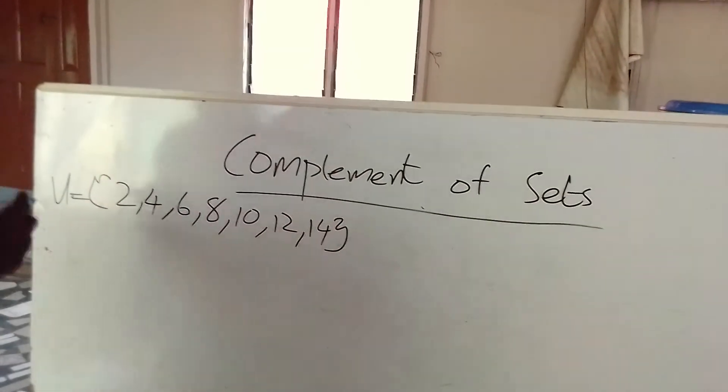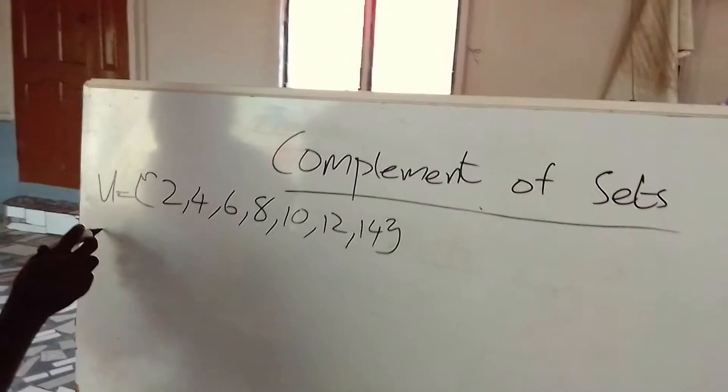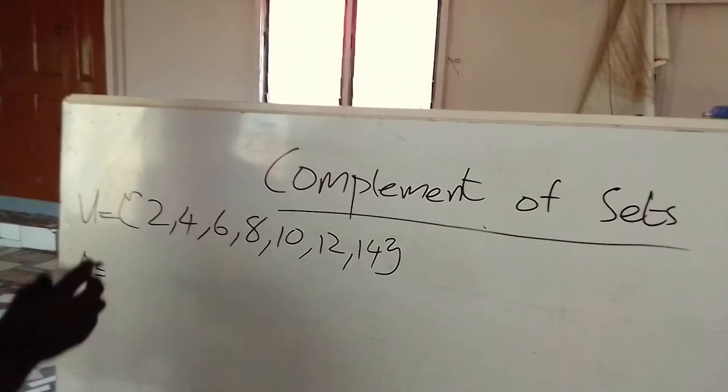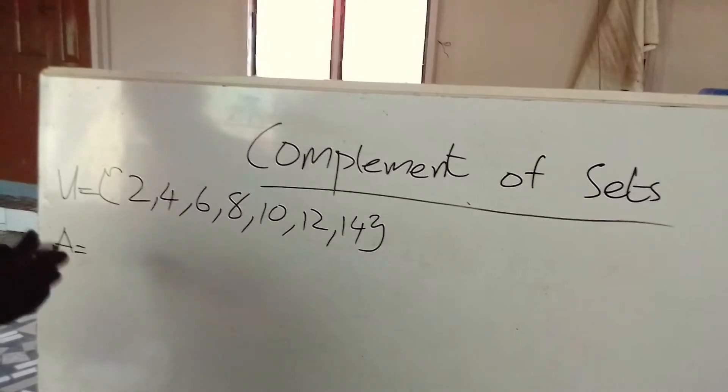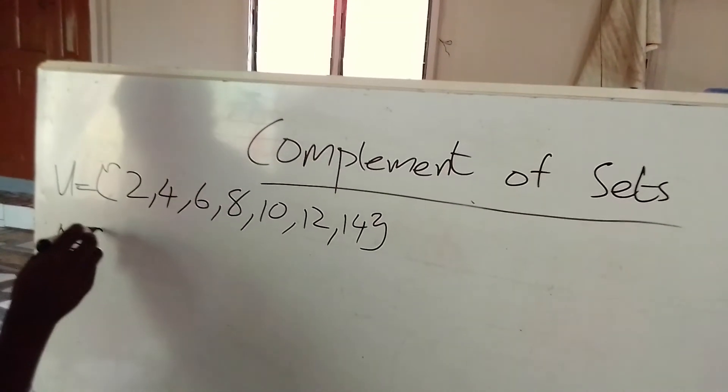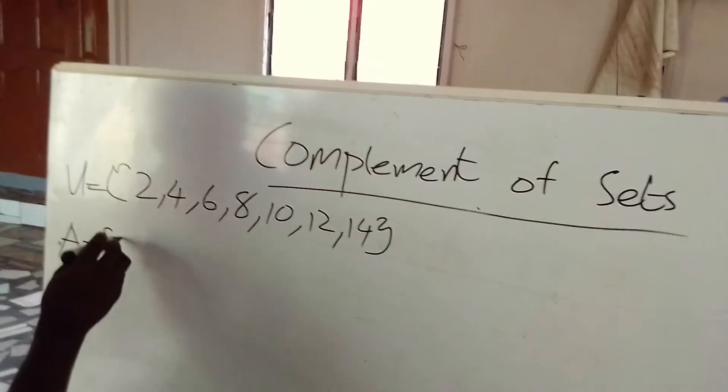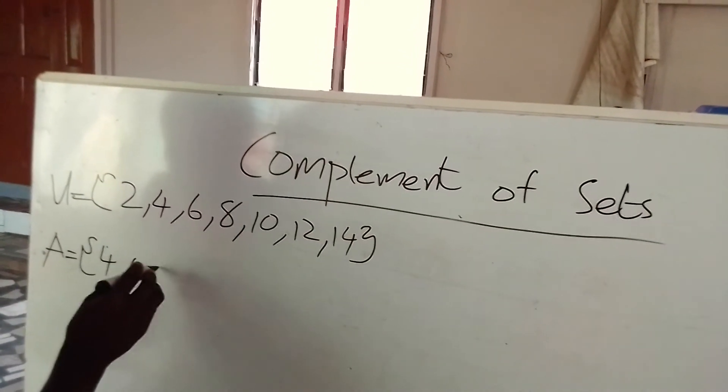And under the universal set, these are some of the subsets. And the element of A in the subset are as follows: 4, 6, 8.